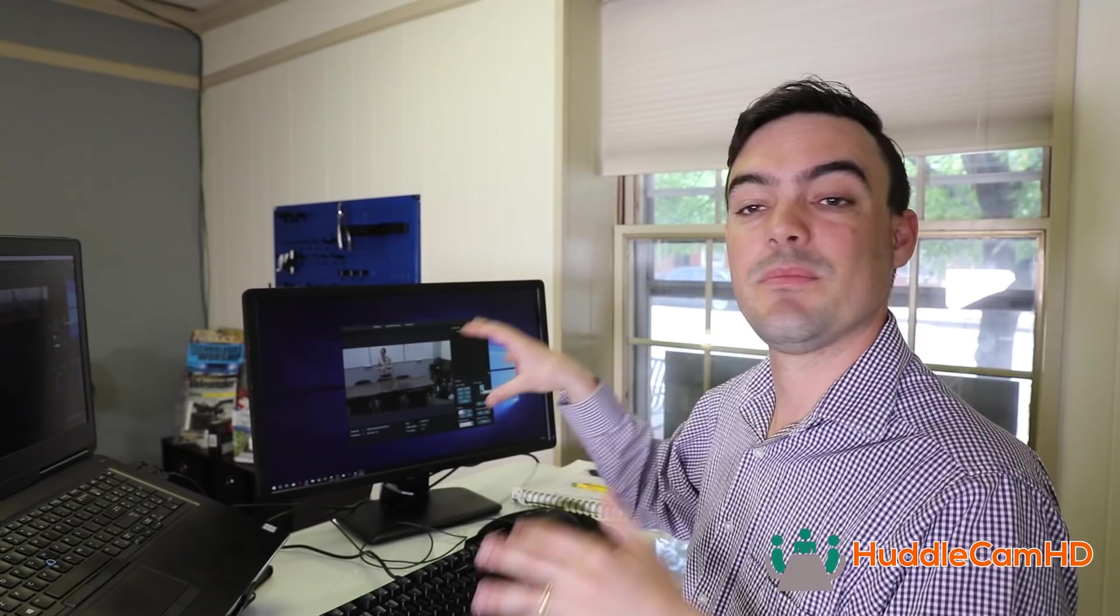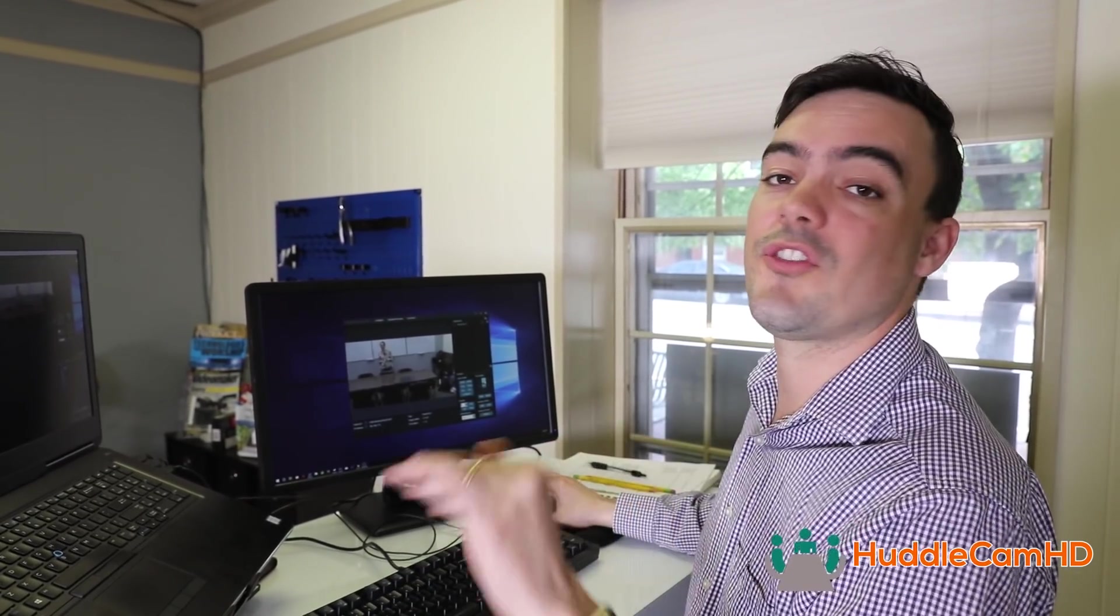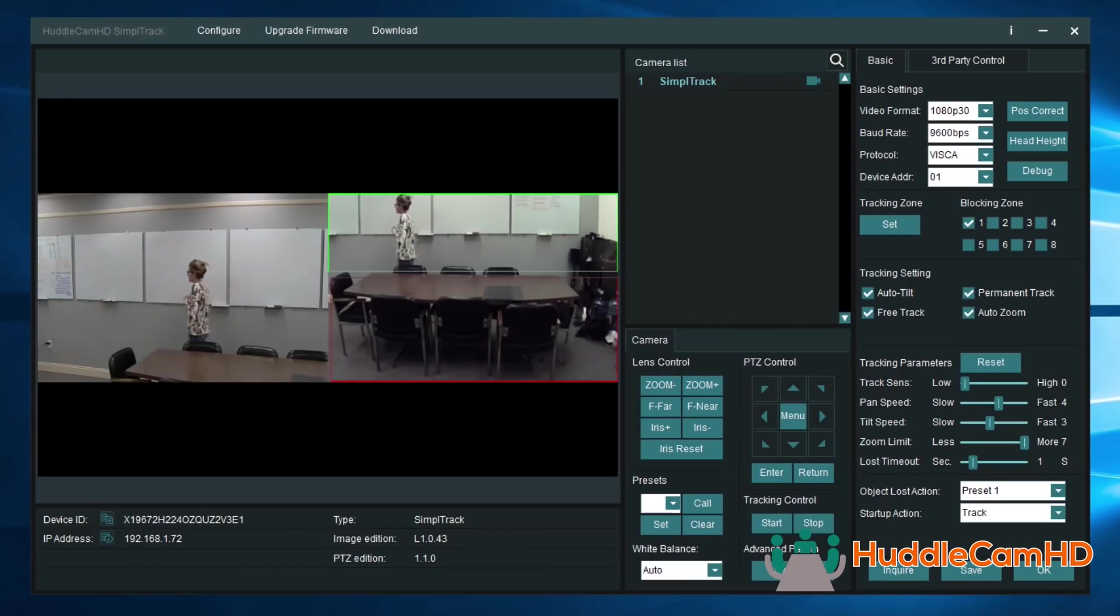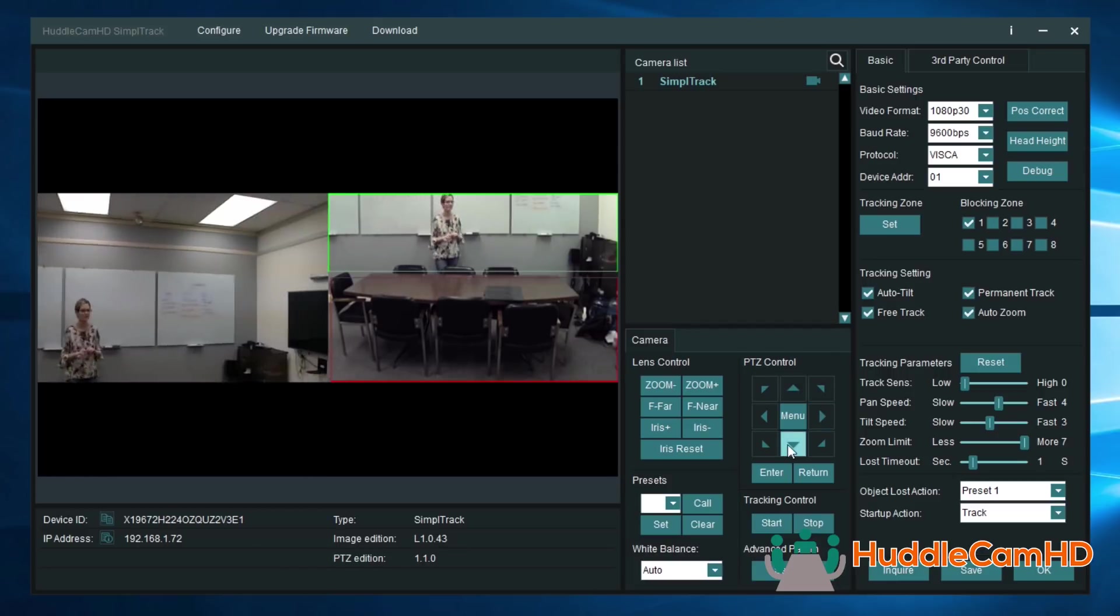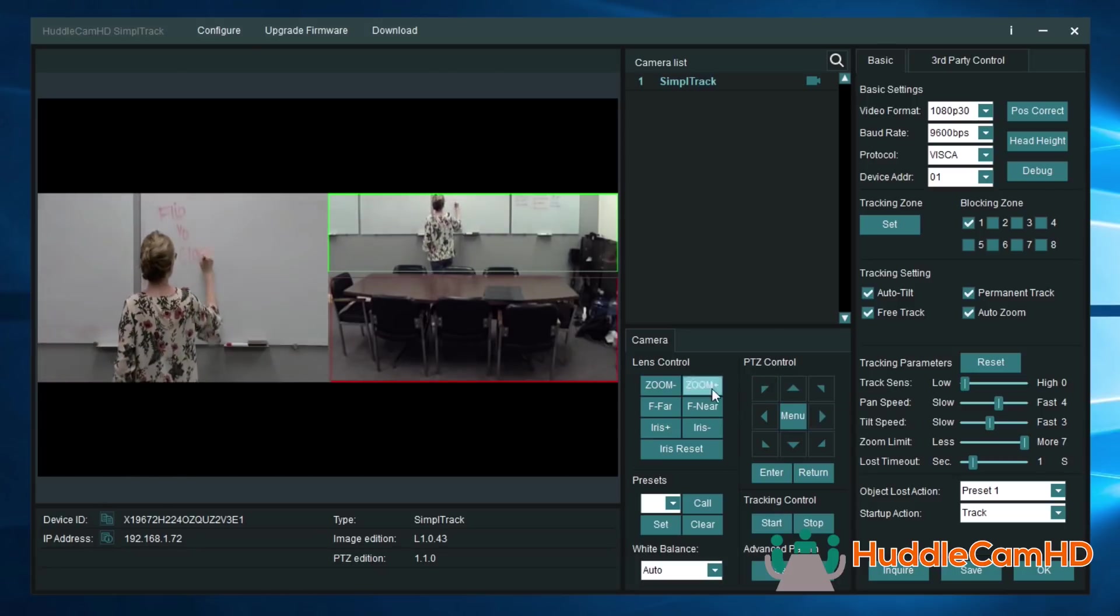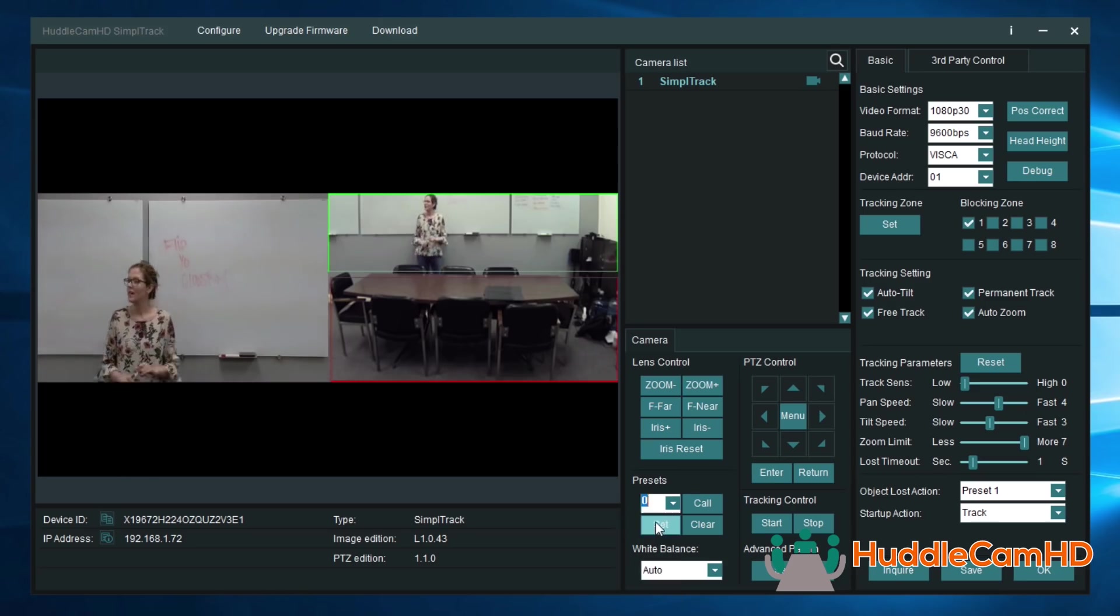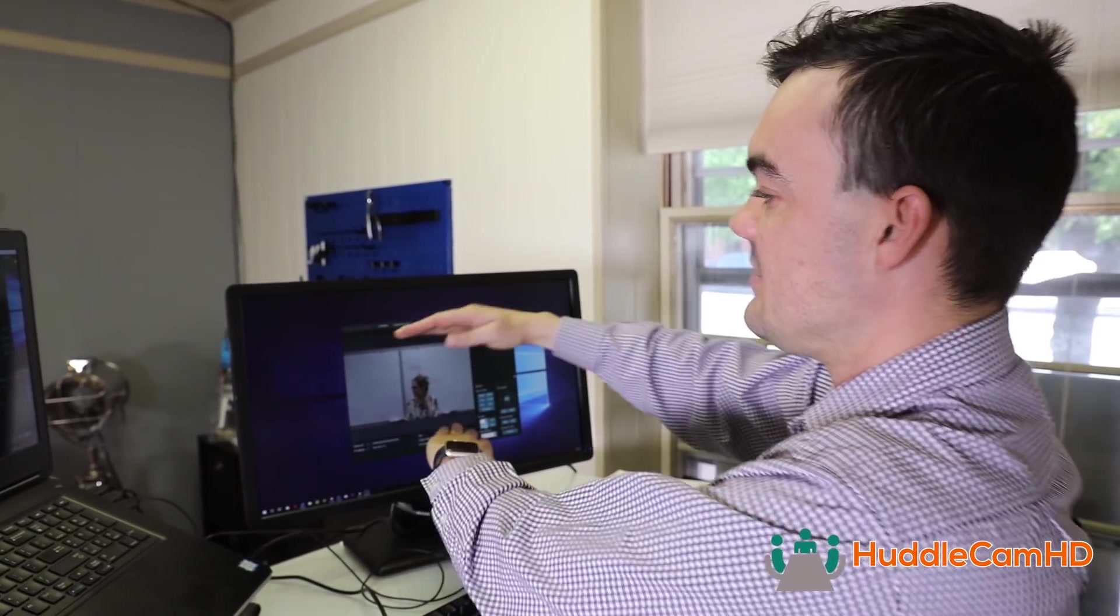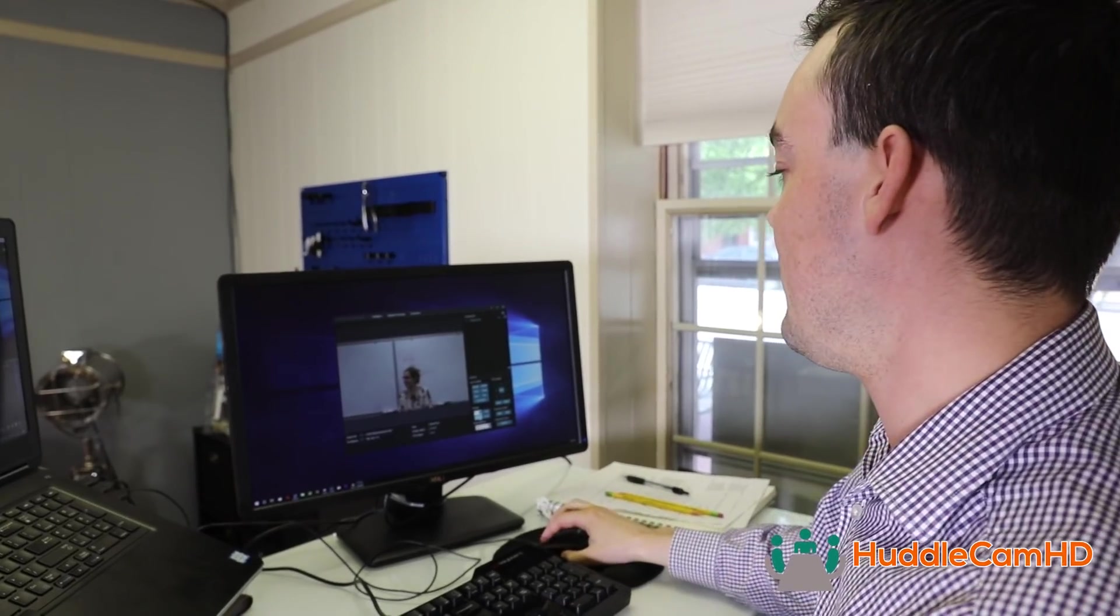Let me just show you really quickly some of the flexibility of the Huddlecam HD Simple Track software. This is really just set and forget. You only set this one time. I want to set up the frame in which the camera is going to track you at the front of the room as you're capturing your lectures. What I like to do is make sure that the viewer can see top to bottom the whiteboard. I'm going to save preset one, which is going to set that as the frame. So that is the frame at which it will zoom into.